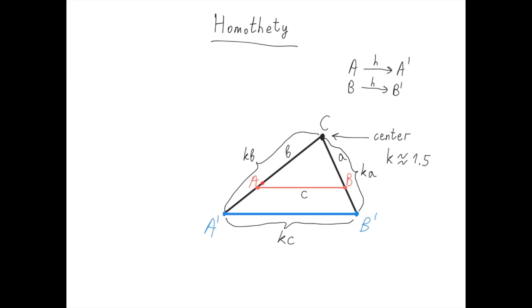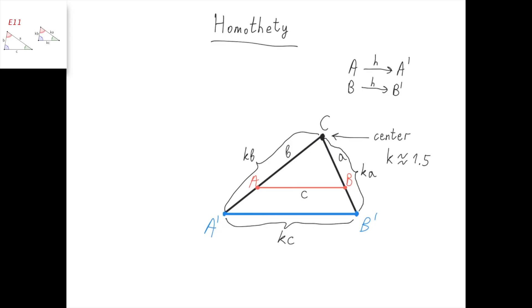Now if we label this point a, this point b, and this point c, it means that the center of homothety is c, and under the homothety point a goes to point a prime, and point b goes to point b prime. Similarly to zooming on a map, we know that the original point a, the image a prime, and the fixed point c lie on a straight line. Similarly, b, b prime, and c lie on a straight line.